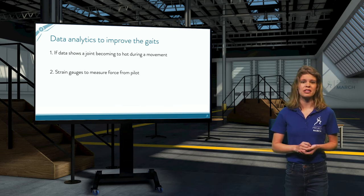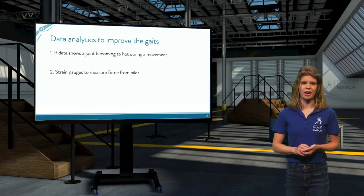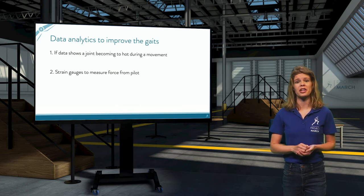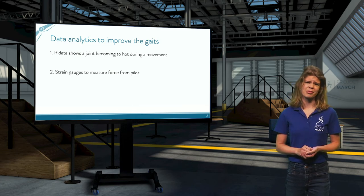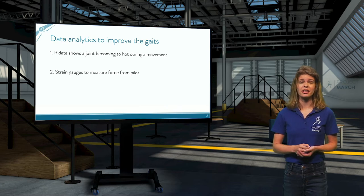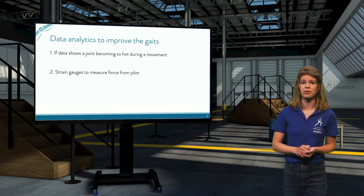One way to do this is by placing strain gauges on the crutches that our pilot use. Strain gauges are very small pieces of wire which could measure how much pressure the pilot is putting on the crutches. If they are putting a lot of pressure on their crutches, it means the gate is quite heavy for them. By using the data from the strain gauges, we could compare different gate patterns and see which one costs our pilot the least amount of force.